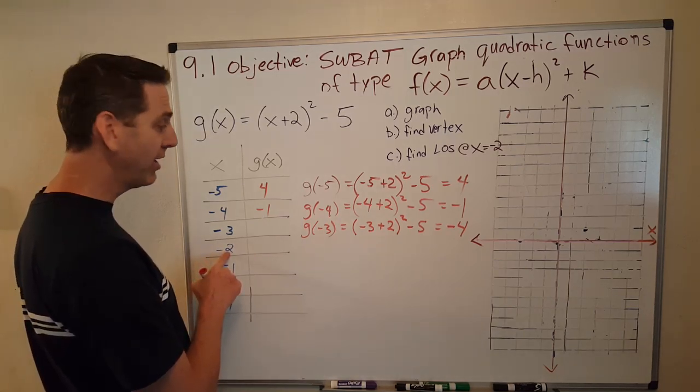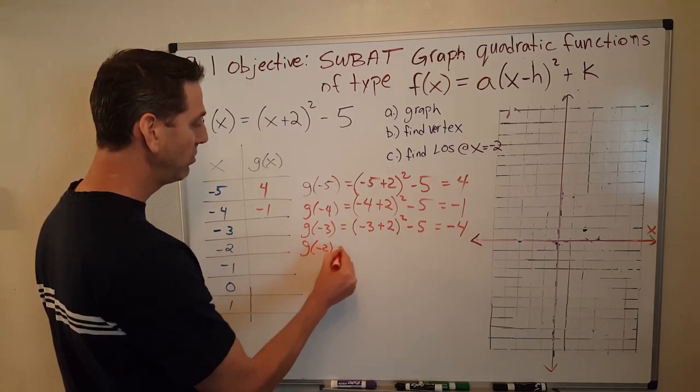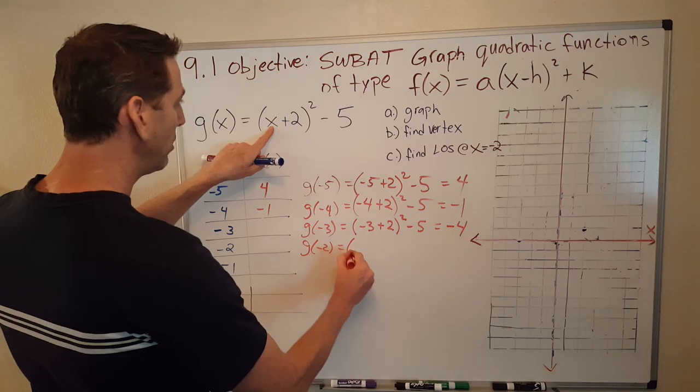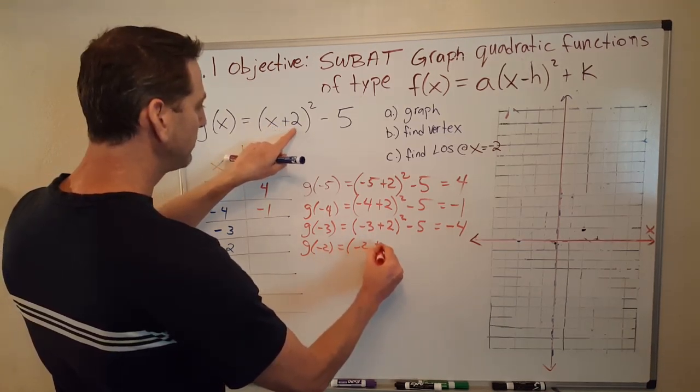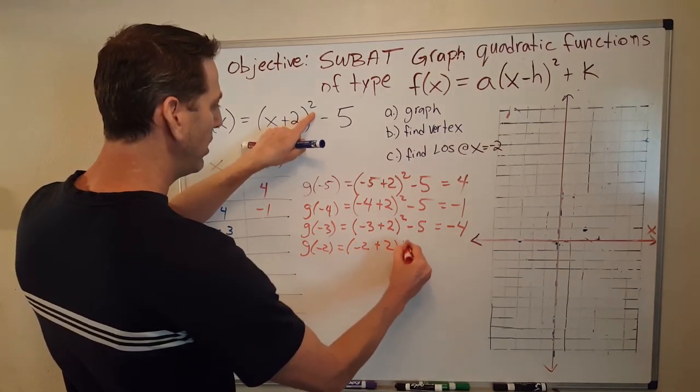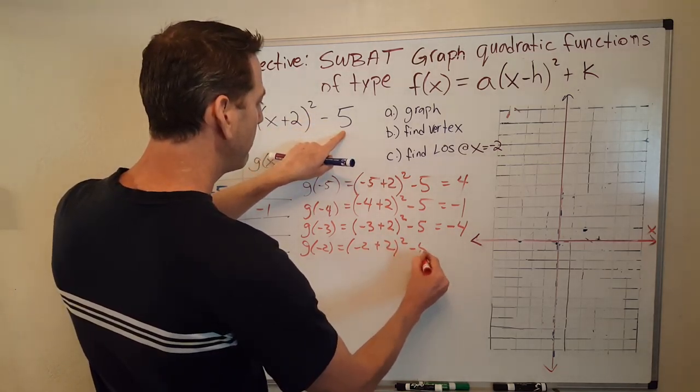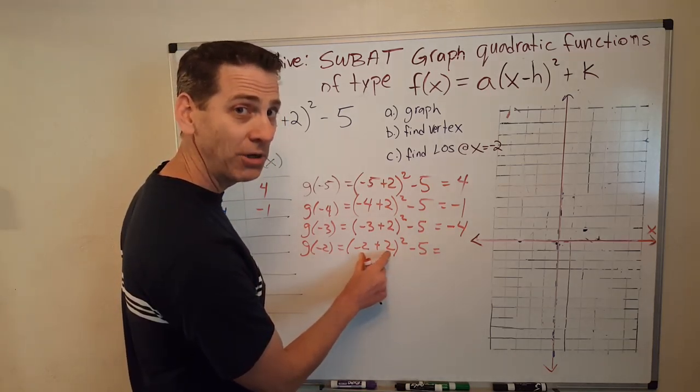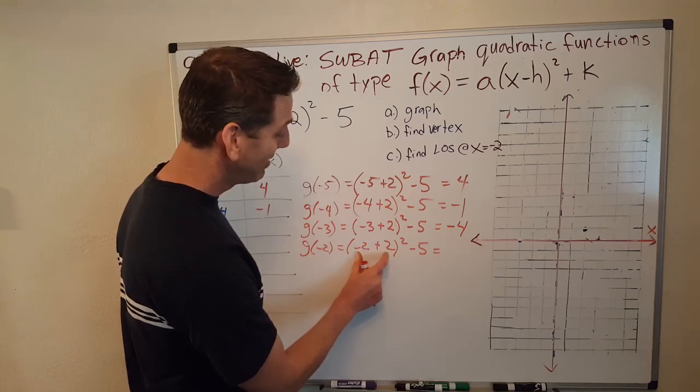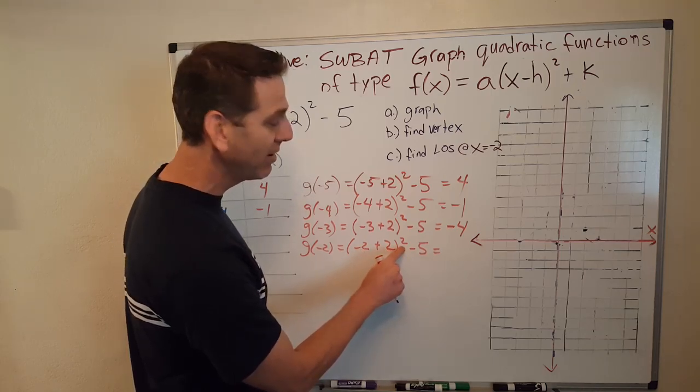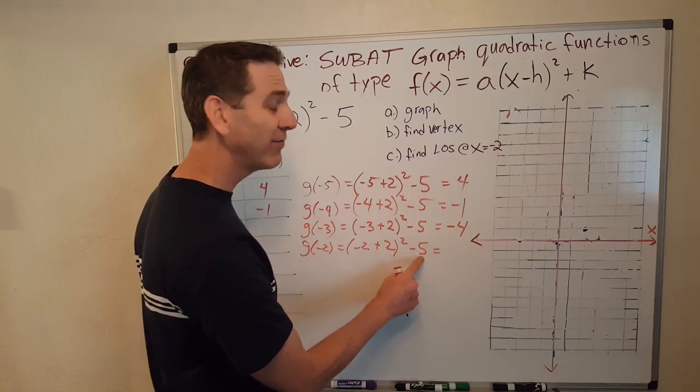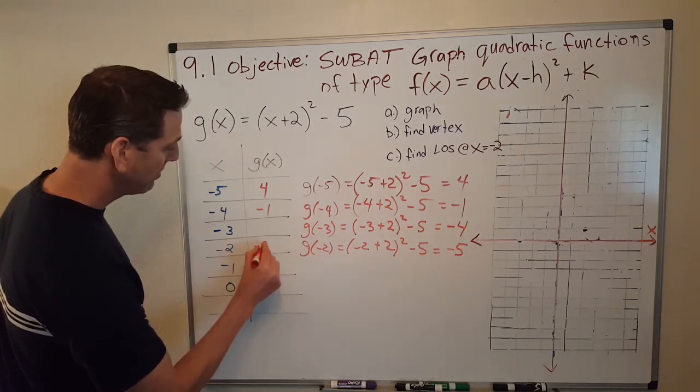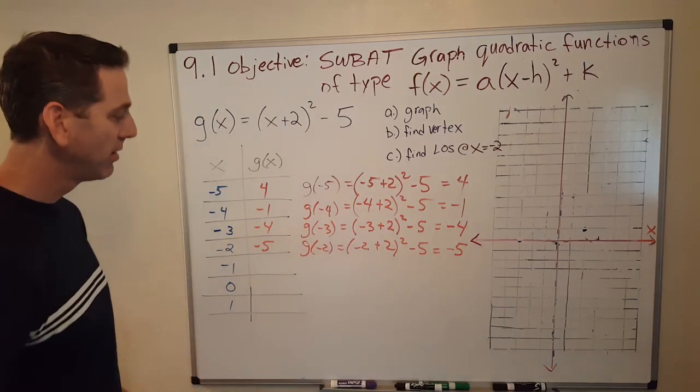So, now I need an x equal negative 2. So, g of negative 2 equals... Right where I see an x, I'm going to put a negative 2. Alright, so negative 2 plus 2 squared minus 5. What does that equal? Well, negative 2 plus 2, that's a 0, right? That's how we knew it was the vertex. That's 0. 0 squared is 0. And 0 minus 5 is negative 5. Oh, we forgot to put negative 4 right there, didn't we?